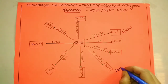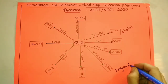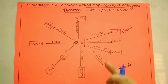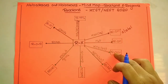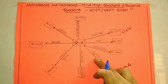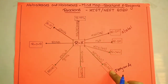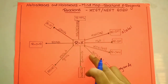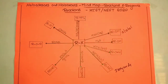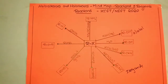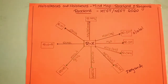Many students, remembering that potassium cyanide gives alkyl cyanide, mistakenly write the same product for silver cyanide — but no, when silver cyanide is treated with alkyl halide, it results in the formation of alkyl isocyanide. Questions on this have repeatedly appeared in exams.